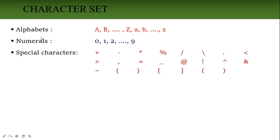Next, numbers — all numbers from 0 to 9 are used in the character set of C++. Then special characters — other than alphabets and numbers, all symbols come in special characters: plus, minus, brackets, flower brackets, equal symbol, dollar symbol, underscore symbol, not symbol — all come in the special character.